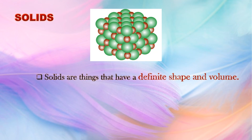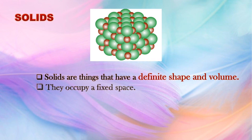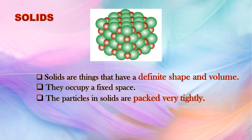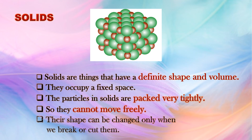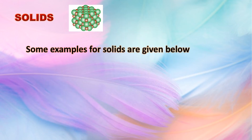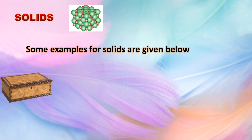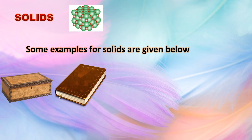Solids are things that have a definite shape and volume. They occupy a fixed space. The particles in a solid are packed very tightly, so they cannot move freely. Their shape can be changed only when we break or cut them. Some examples of solids are given below.